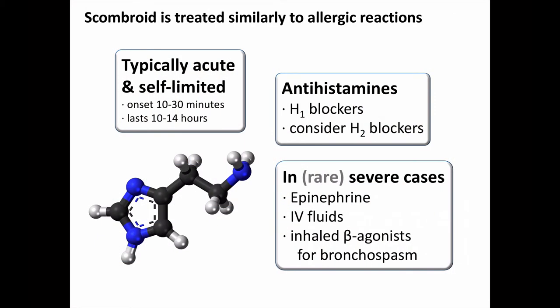In terms of treatment, it probably doesn't matter much if it's an allergy or scombroid, since they are treated very similarly. Treatment is typically just with antihistamines, such as diphenhydramine, an H1 blocker. H2 blockers may also be considered. In rare, more severe cases, epinephrine and IV fluids for hypotension may be considered. And if the patient has bronchospasm, give nebulized beta-2 agonists like albuterol. Corticosteroids are a mainstay of treatment for significant allergic reactions, but because scombroid is due to histamine ingestion rather than inflammation and mast cell degranulation, they don't have a strong role here.